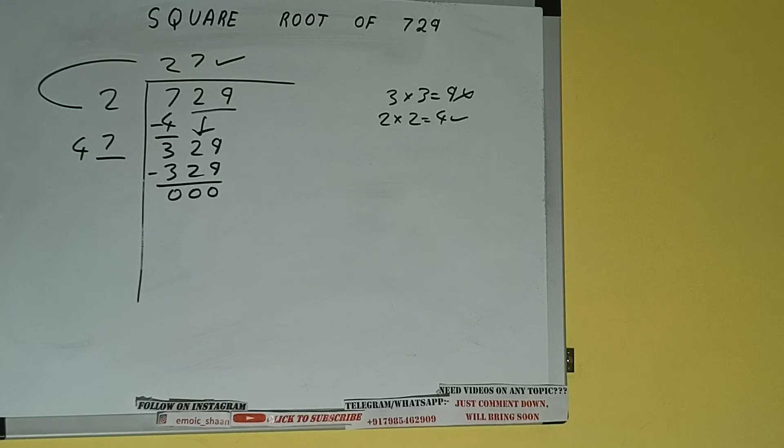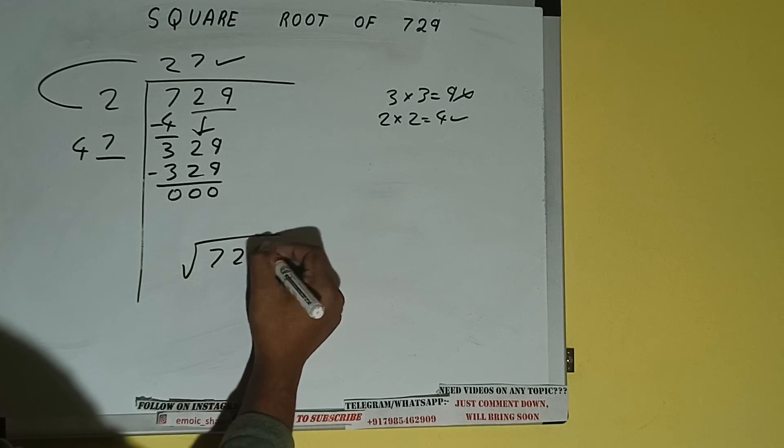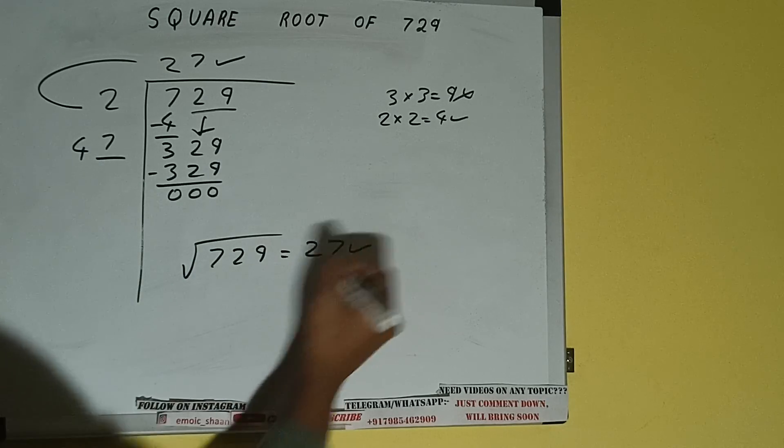That is 27. So square root of 729 will be 27. That will be the answer.